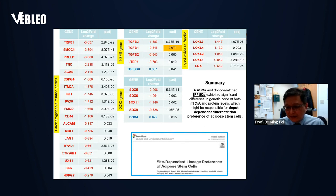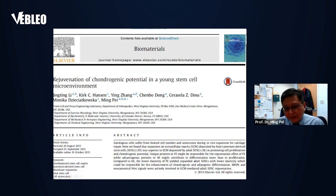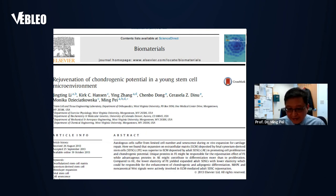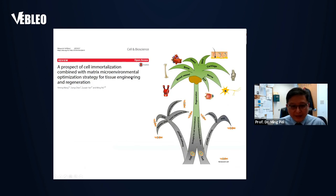Our previous studies show that ECM deposited by young stem cells can rejuvenate adult stem cell chondrogenic potential. However, most patients are older and their stem cells are old. Using ECM from old stem cells may not benefit adult stem cell rejuvenation. To solve this problem, we combined two approaches: ECM and cell immortalization, because these two factors can modulate adult stem cell fate. If we used young allogeneic or xenogeneic cells, the ECM might cause immune issues.